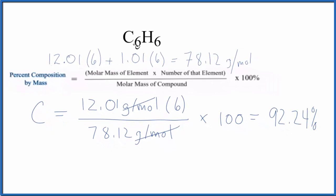If you had a sample of benzene and you wanted to know the mass, how much of its mass was due to carbon, 92.24 percent would be due to the carbon. Let's do this for hydrogen now.